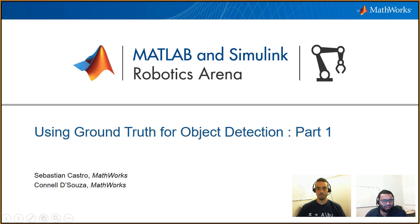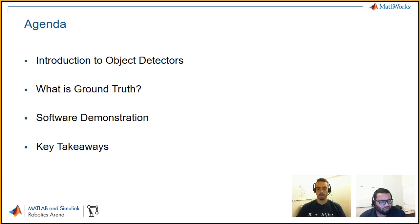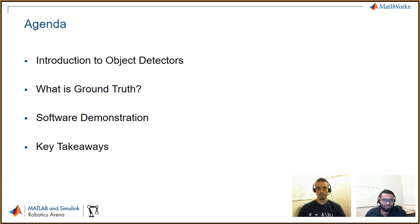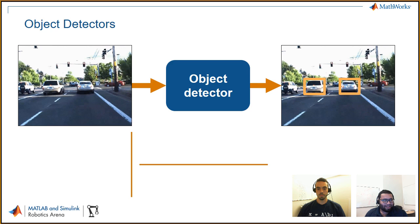So for today's agenda we're going to do a quick overview of what object detectors are and what we're trying to achieve by creating them. Then we'll talk about what ground truth is, do a quick software demonstration of the ground truth labeler app which is part of the automated driving systems toolbox, and finally cover key takeaways and point you to resources to help get started with your competitions.